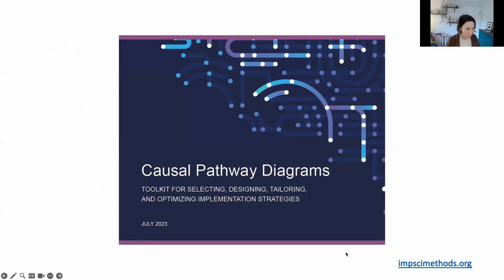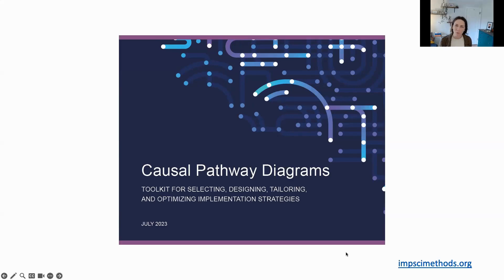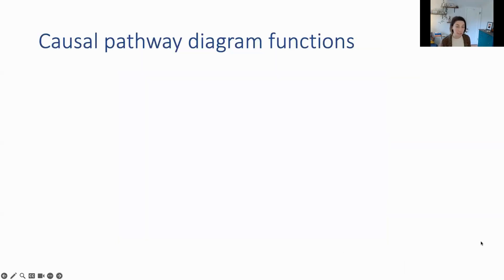I'm not going to go into the nitty gritty of how you actually develop causal pathway diagrams, but we have those resources developed. We've developed a toolkit on what causal pathway diagrams are, how you can develop them, where you get the information you need to think about mechanisms — how do I know what the mechanism might be for this implementation strategy? How do I think about effect modifiers? You can go to msimethods.org to access that toolkit. We have step-by-step instructions as well as examples to illustrate how to use causal pathway diagrams.